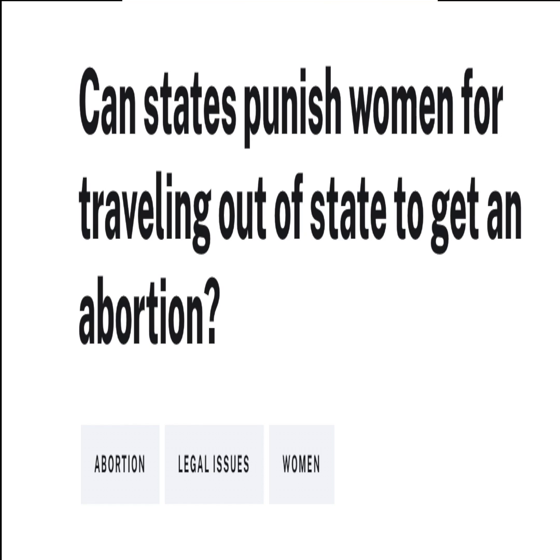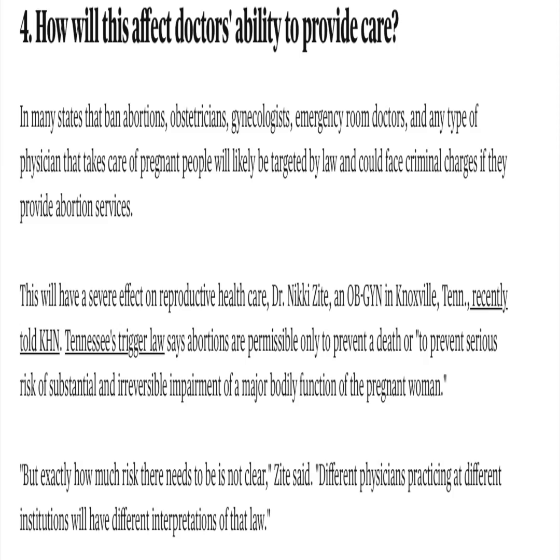Now we're going to talk about how the overturn is really going to affect women. The first point is travel — can states punish women for traveling to another state to get an abortion? Women traveling state to state to get an abortion would be very important for them in the case of a medical emergency, so hopefully they don't try to ban or punish women for that.